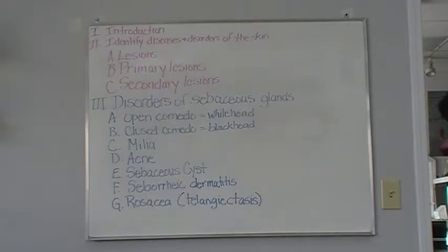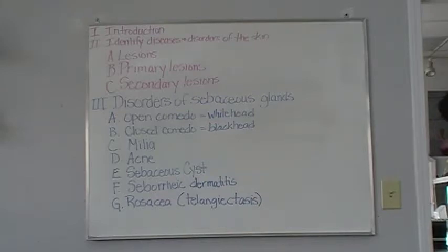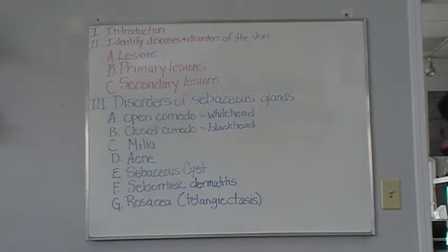A papule is a small elevation on the skin that contains no fluid but may develop pus. A pustule is a raised, inflamed papule with a white or yellow center containing pus in the top of the lesion. A tumor is an abnormal mass varying in size, shape, and color — any type of abnormal mass, not always cancer. Requires medical referral.